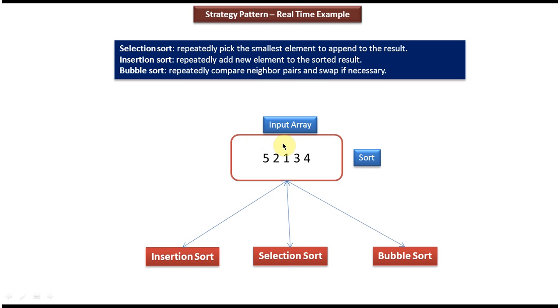Now we will see the real time example of strategy design pattern. So here you can see input array. The input array has five values. I want to sort the values in the input array.